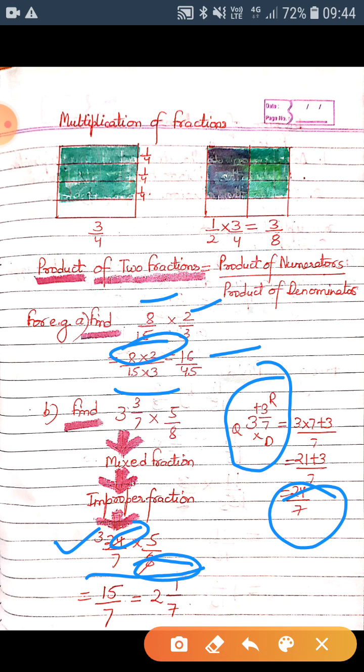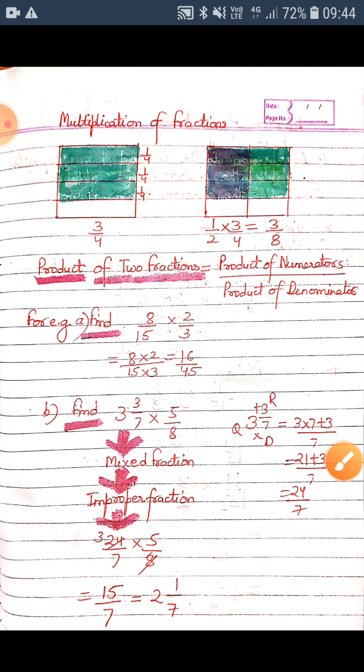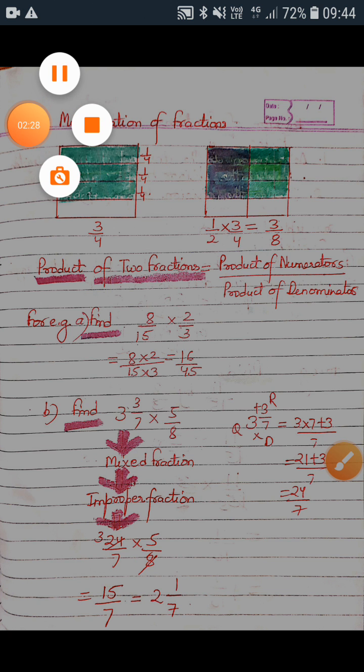We can write this as a mixed fraction. That is fifteen divided by seven, which is two wholes and one by seven. So this is the multiplication method for multiplying the two fractions.